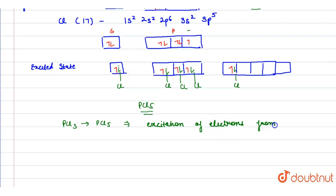s subshell to d subshell. This phenomenon is also known as extension of covalency, because here phosphorus extends its covalency from 3 to 5 in PCl5.